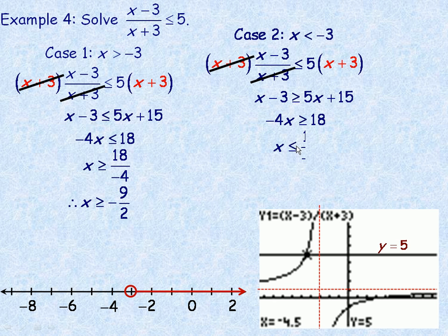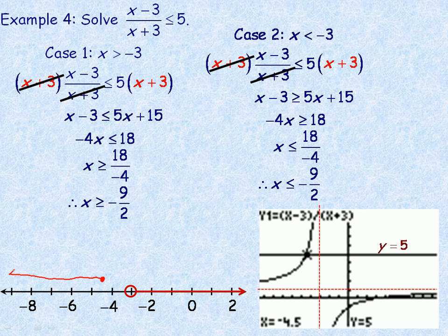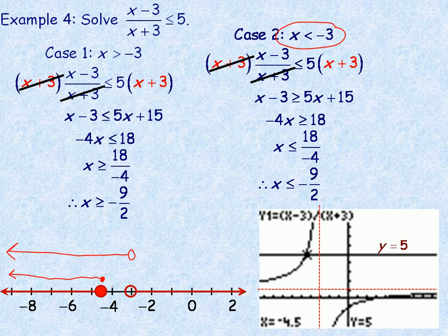Dividing out the negative 4 and reducing, I now get x is less than or equal to negative 9 halves. Looking at the number line, x is less than or equal to negative 4.5, which is right here, and less than of course means to the left of that. Comparing that to the case x is less than negative 3, where those two overlap is the interval less than or equal to negative 4.5.